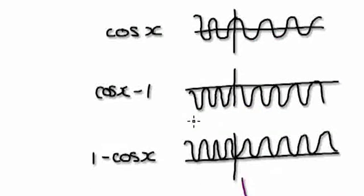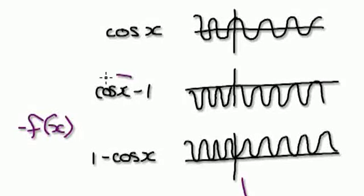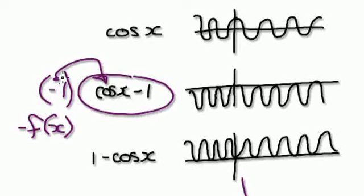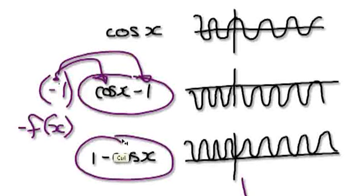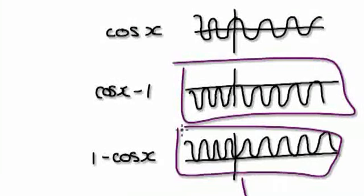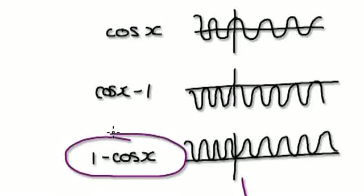The next thing is to reflect it along the x-axis, applying this transformation. When you apply that transformation, it's in effect multiplying by minus 1. And when you multiply through, it will give you this. So when you're here, reflect it along the x-axis, and it will give you this. So 1 minus cos(x) is this graph here.